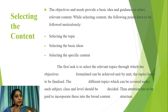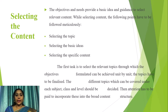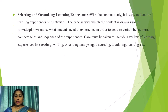Selecting the content: The objectives and needs provide a basic idea and guidance to select relevant content. While selecting content, the following points have to be followed meticulously: selecting the topic, selecting the basic ideas, and selecting the specific content. The first task is to select the relevant topics through which the objectives formulated can be achieved unit by unit. The topics have to be finalized — the different topics which can be covered under each subject, class and level should be decided. Then attention has to be paid to incorporate these into a broader content structure.